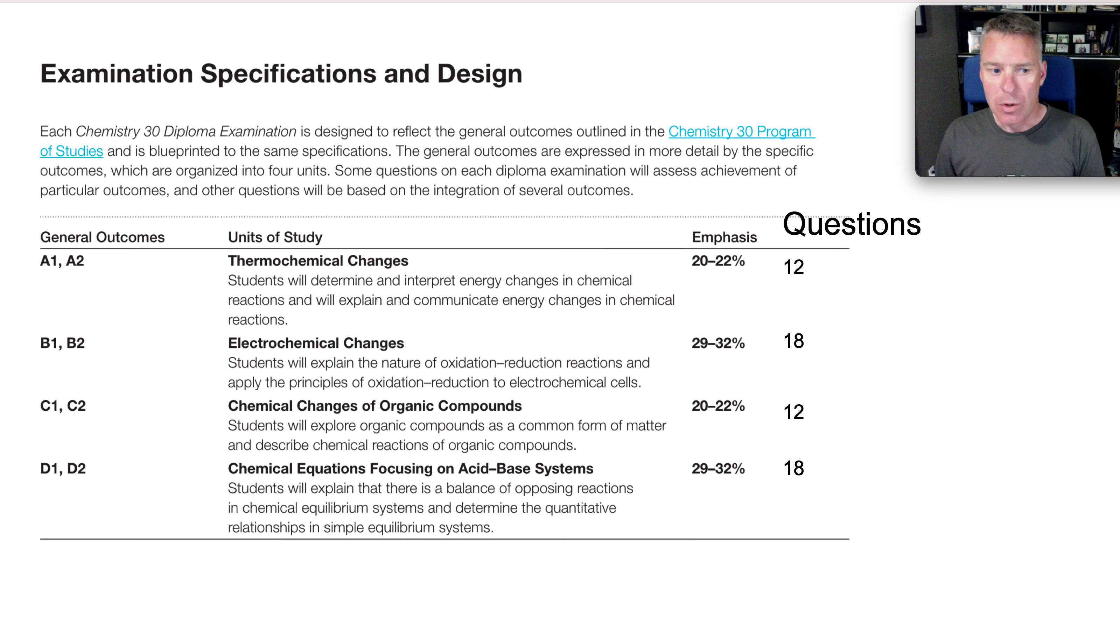The breakdown of the diploma from Thermo Chem. So the bulletin says there's about 20 to 22 percent of the questions from that unit so that's going to work out to be about 12 questions. This part, the question section, is done by me and is not part of the bulletin and that's why I'm using the word about.